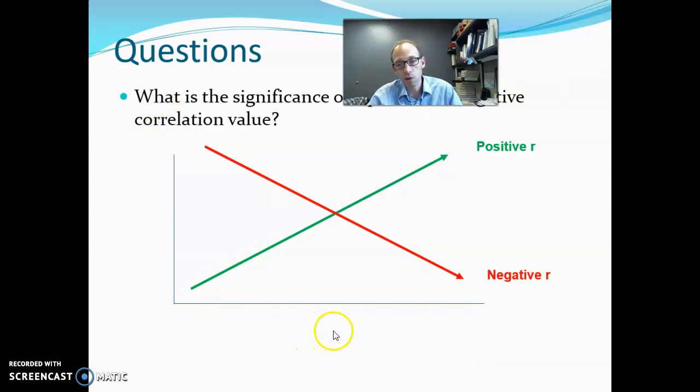And maybe this is your risk of cancer. So the more and more vegetables you eat, the lower and lower your risk of getting cancer. That would be a negative. I mean, it's actually a really good thing. We use the word negative. It's negative in the sense that as X values increase, the Y values tend to decrease.